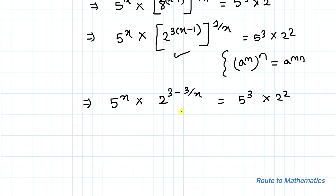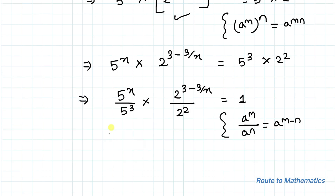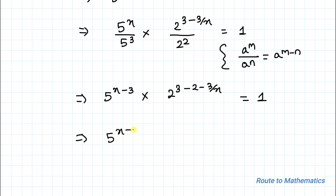Now we will take all the terms from the right-hand side to the left-hand side by cross multiplication, giving us 5 to the power x divided by 5 to the power 3, multiplied with 2 to the power 3 minus 3 by x divided by 2 to the power 2, equals 1. We apply the basic exponential rule that a to the power m divided by a to the power n equals a to the power m minus n. This gives us 5 to the power x minus 3, multiplied with 2 to the power 1 minus 3 by x, equals 1.